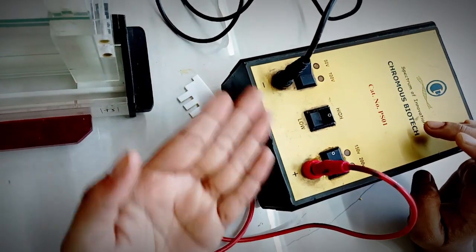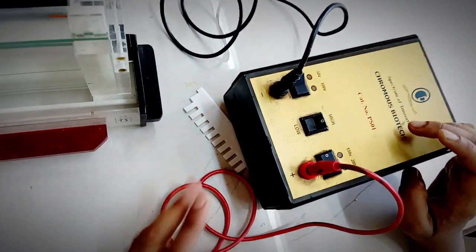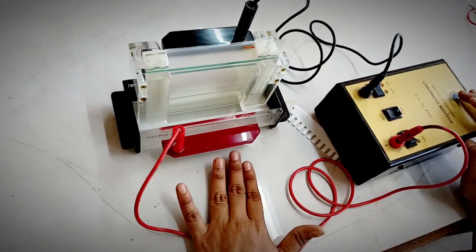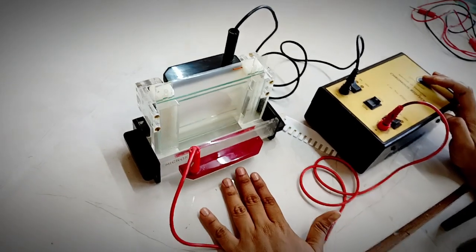So here you can see these are the electrodes, negative and positive, black and red, and you are supposed to attach them. So this is the whole setup for vertical gel electrophoresis apparatus.